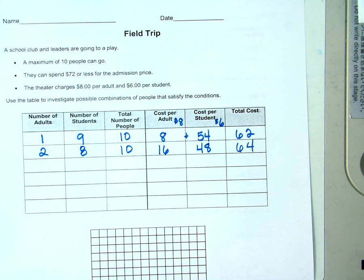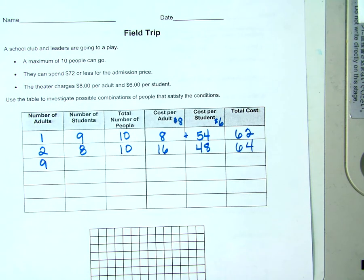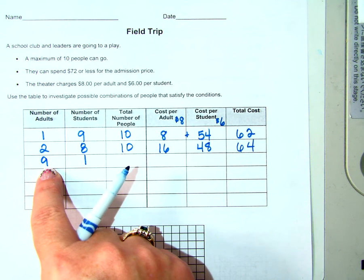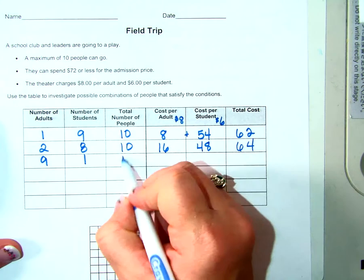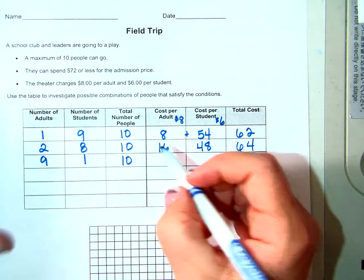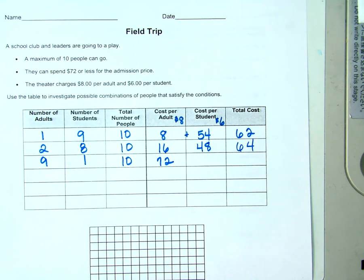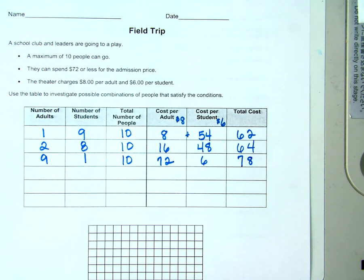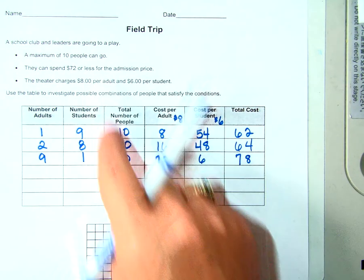How many adults are going? That's boring. You guys are boring. I'm not going to write three. It's boring. Nine adults are going. How many students are going? One. If, in my opinion, that's a bunch of adults that want to get out of school. For the record, sometimes I'm in that group. How many people are going? How much is it going to cost for the adults? $72. How much is it going to cost for the students? $6. So what's the total cost? Why are you shaking your head? It's over $72. It doesn't work, does it?